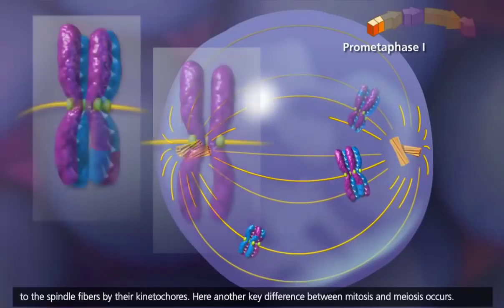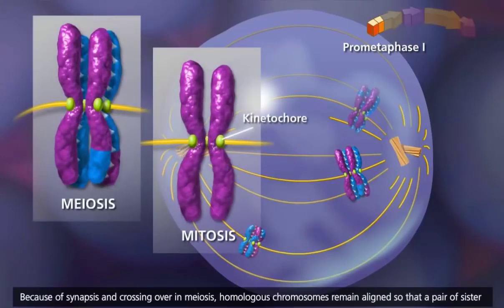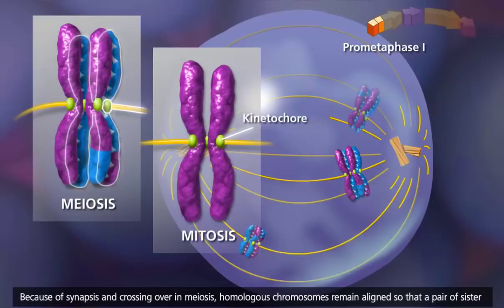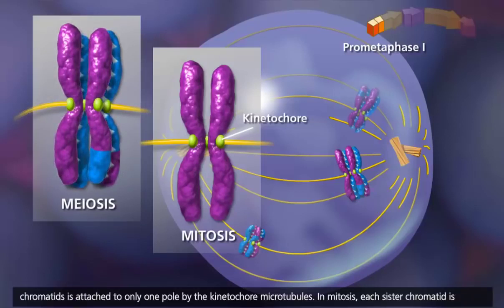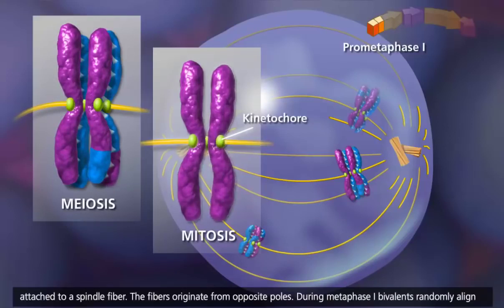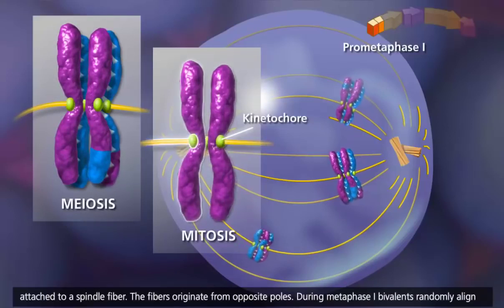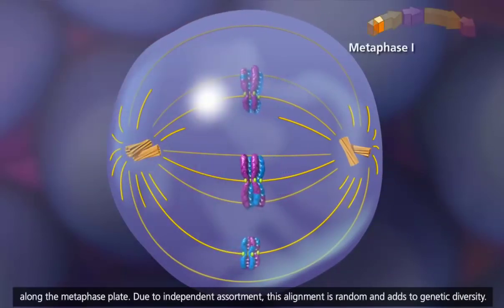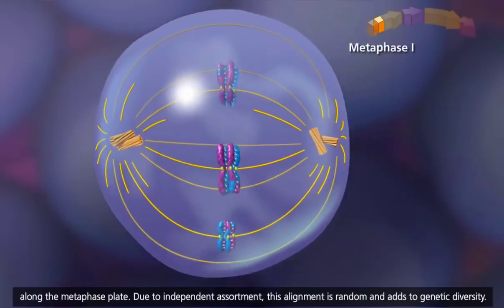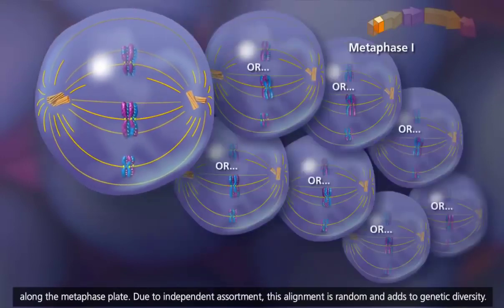Here, another key difference between mitosis and meiosis occurs. Because of synapsis and crossing over in meiosis, homologous chromosomes remain aligned, so that a pair of sister chromatids is attached to only one pole by the kinetochore microtubules. In mitosis, each sister chromatid is attached to a spindle fiber, with fibers originating from opposite poles. During metaphase I, bivalents randomly align along the metaphase plate. Due to independent assortment, this alignment is random and adds to genetic diversity.